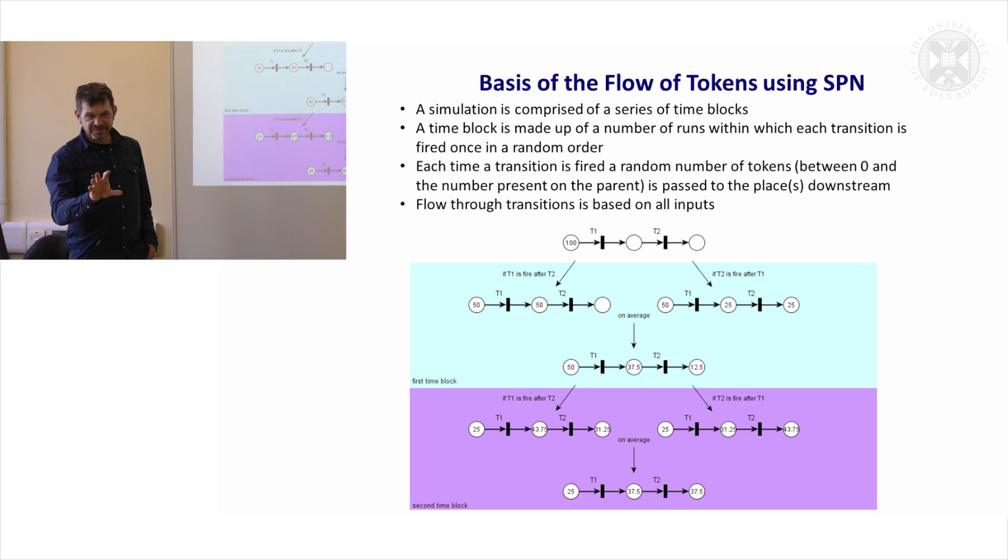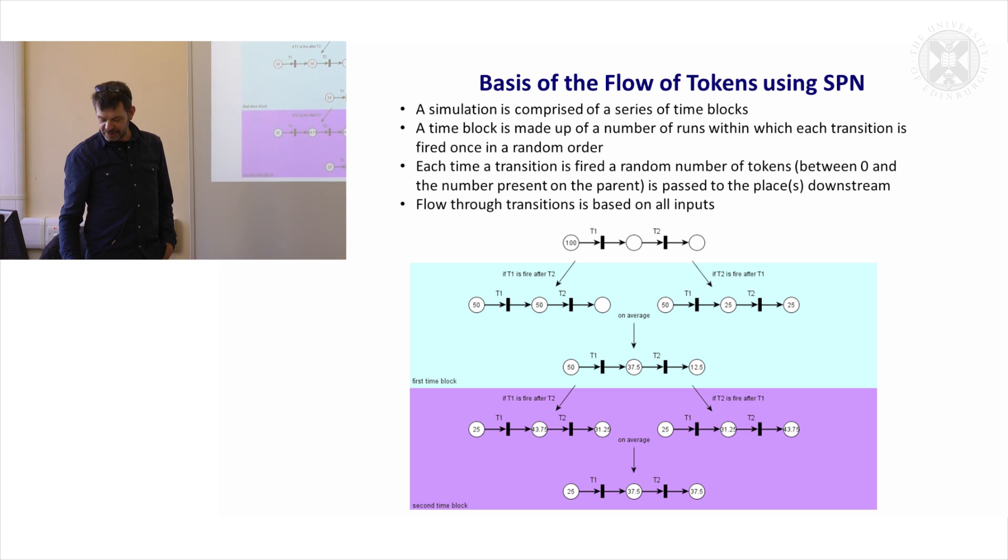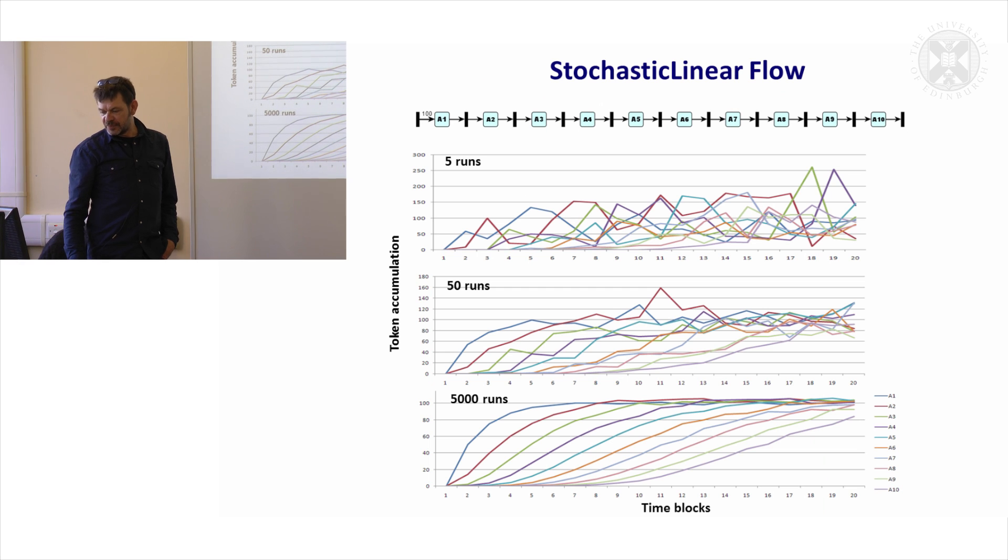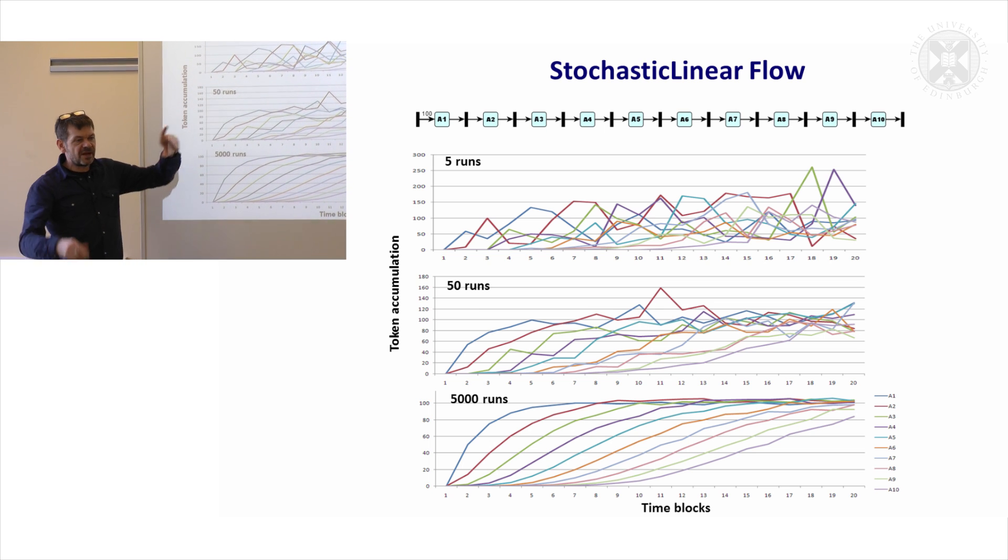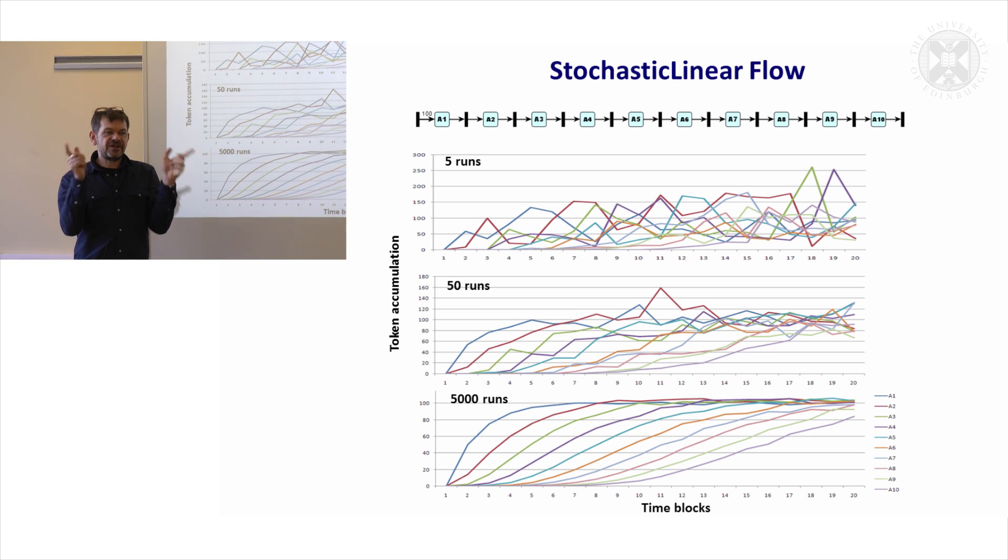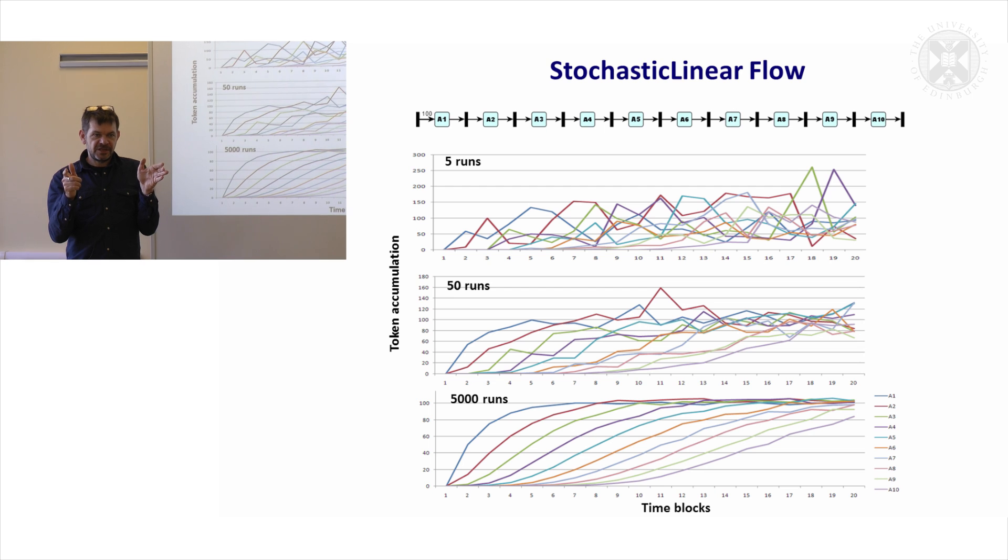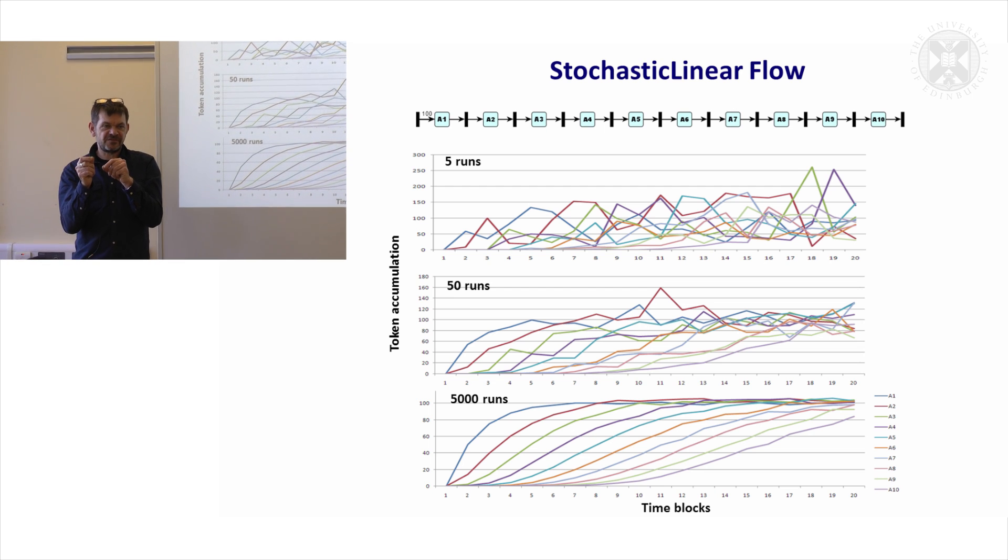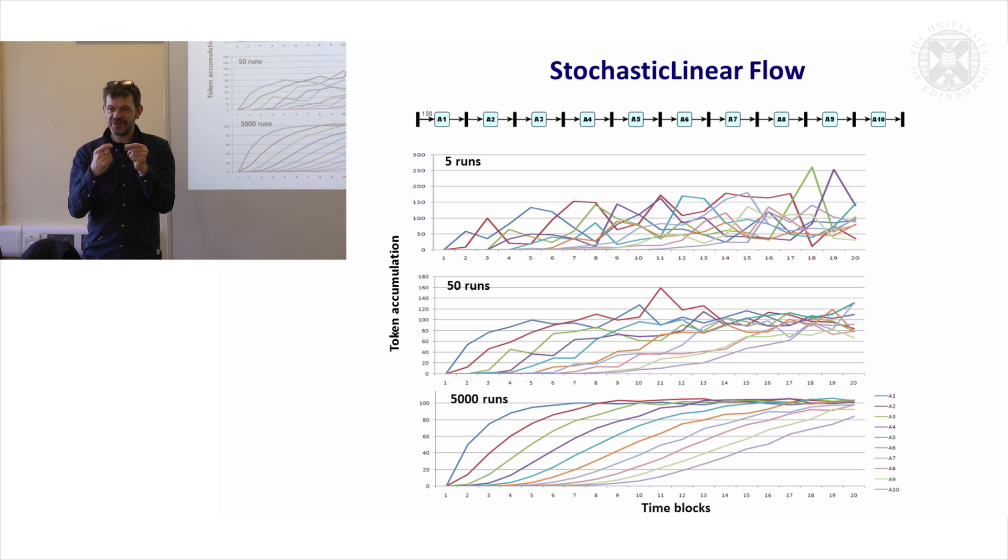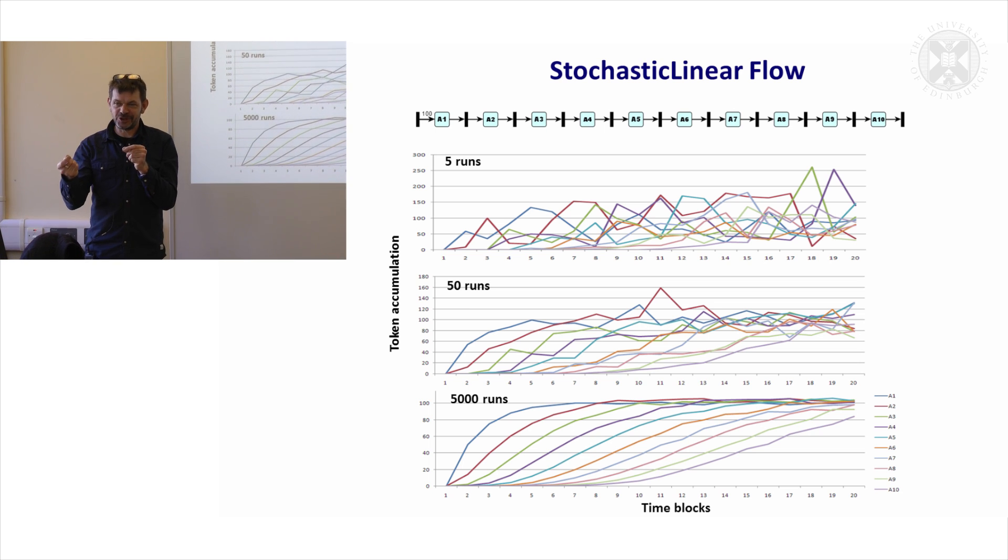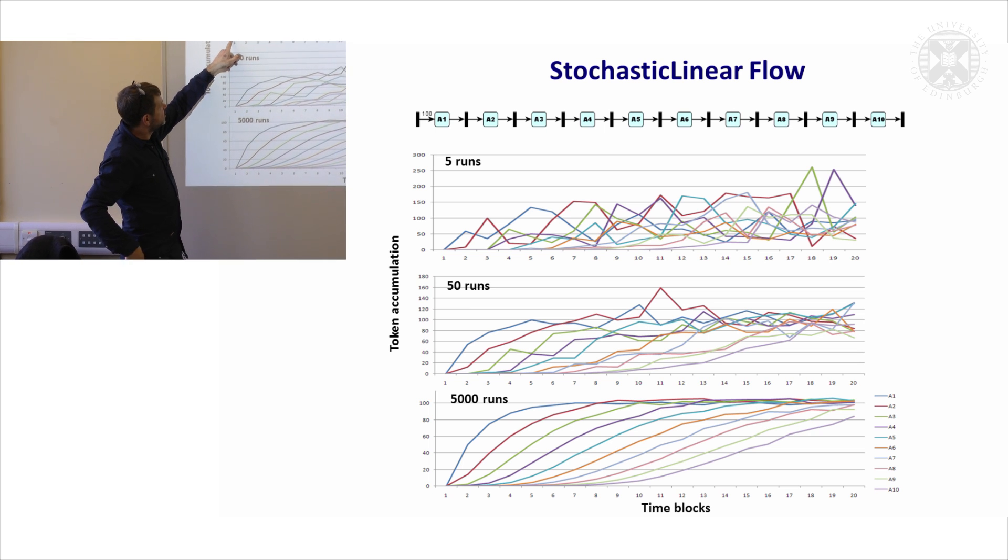So that's one firing, and we repeat this process again, and again you get a distribution of tokens through the system. Not easy to get, but I'll show you, as I say, once we actually get into it. So if we take that same scenario, and we do it, so run is where we actually fire every transition once. So the smaller the numbers the runs have, the more stochastic, the more random the answer is going to be, because we're a long way from the average.